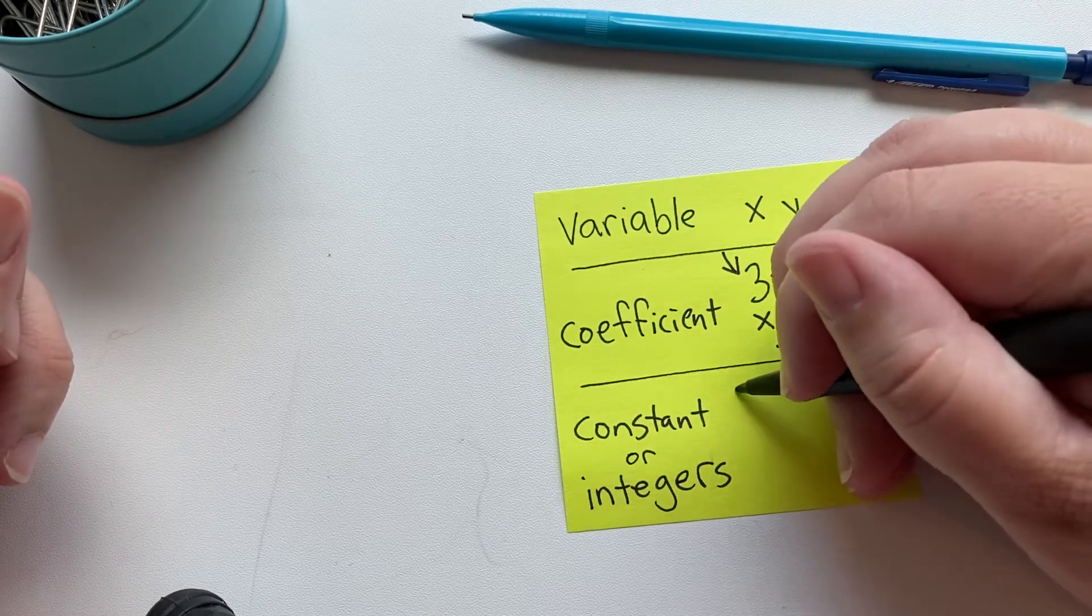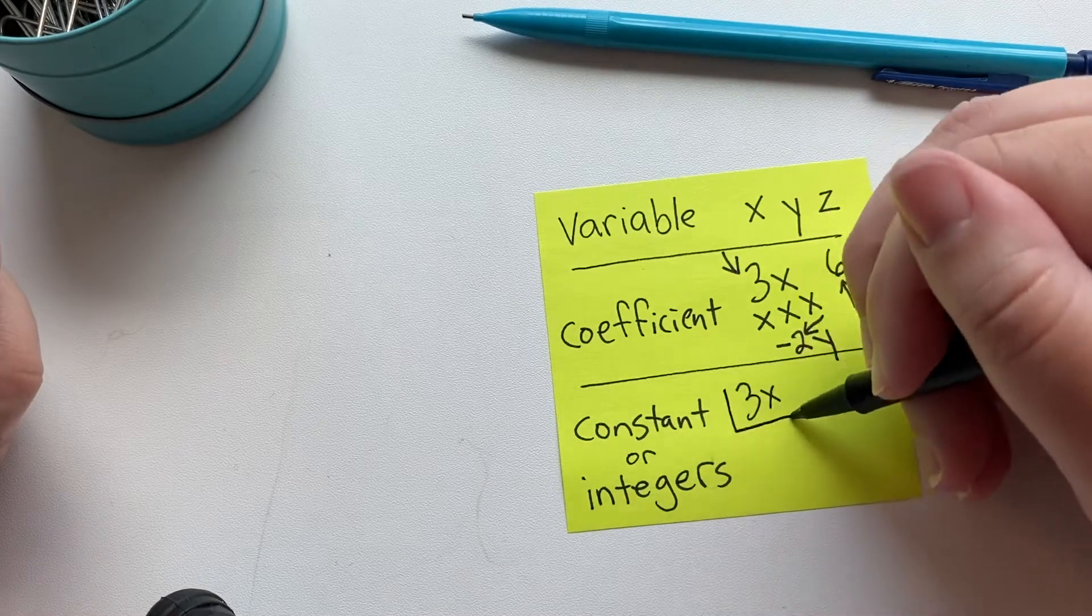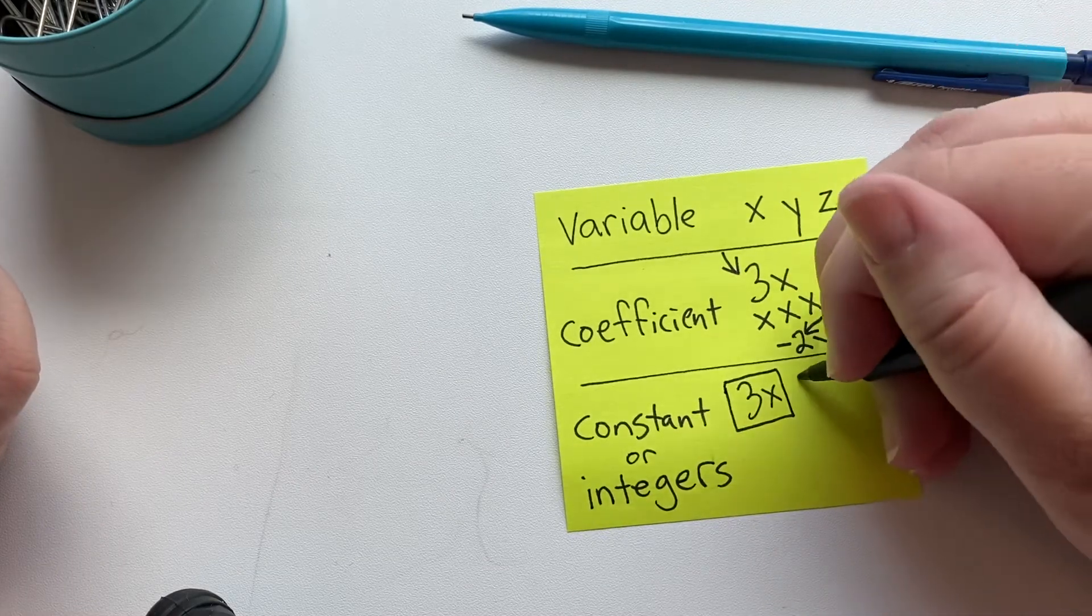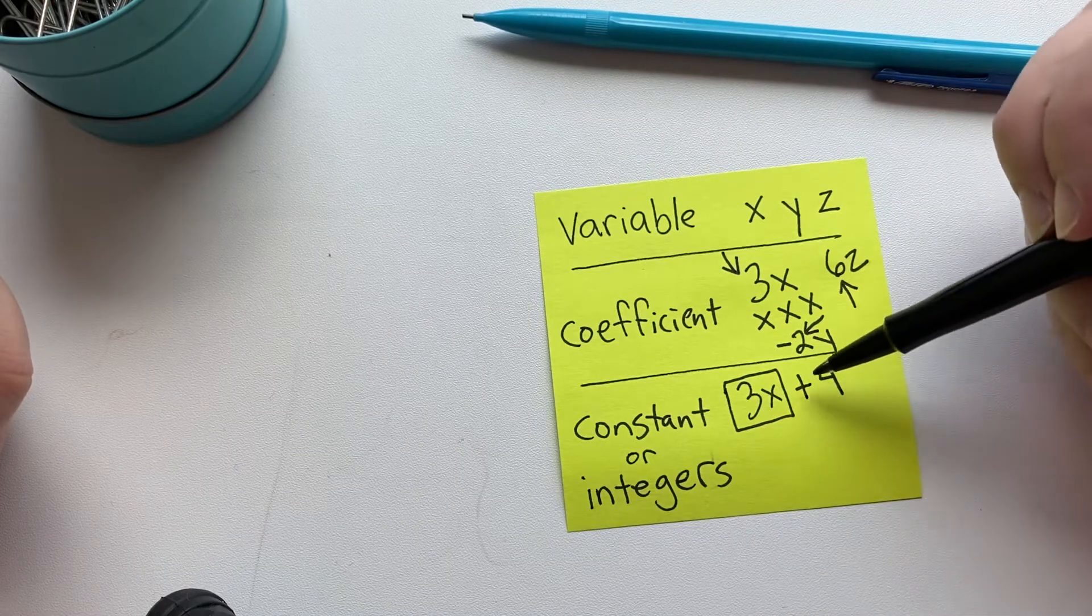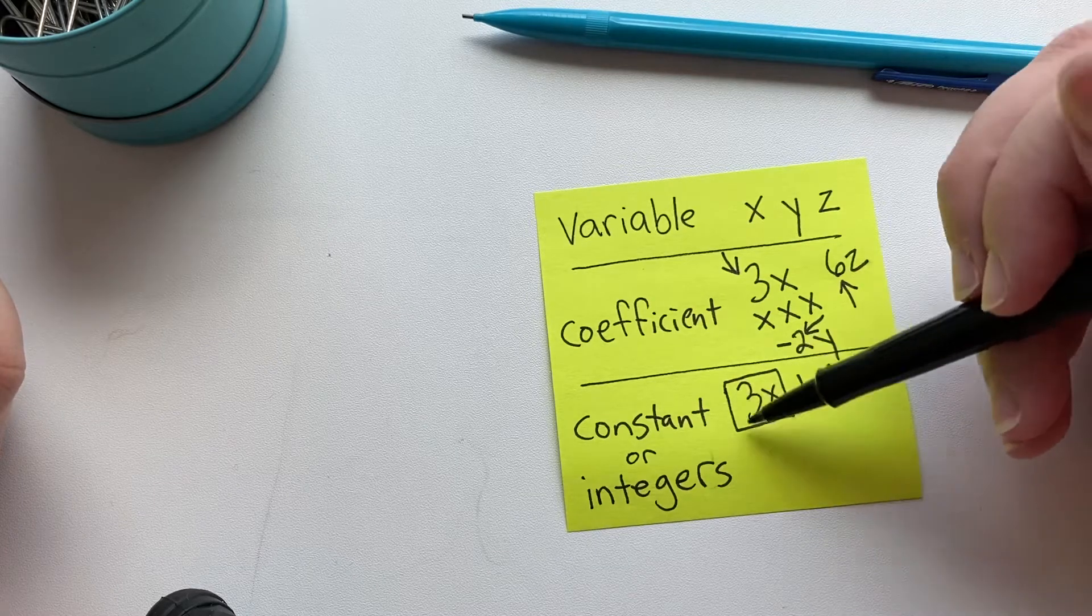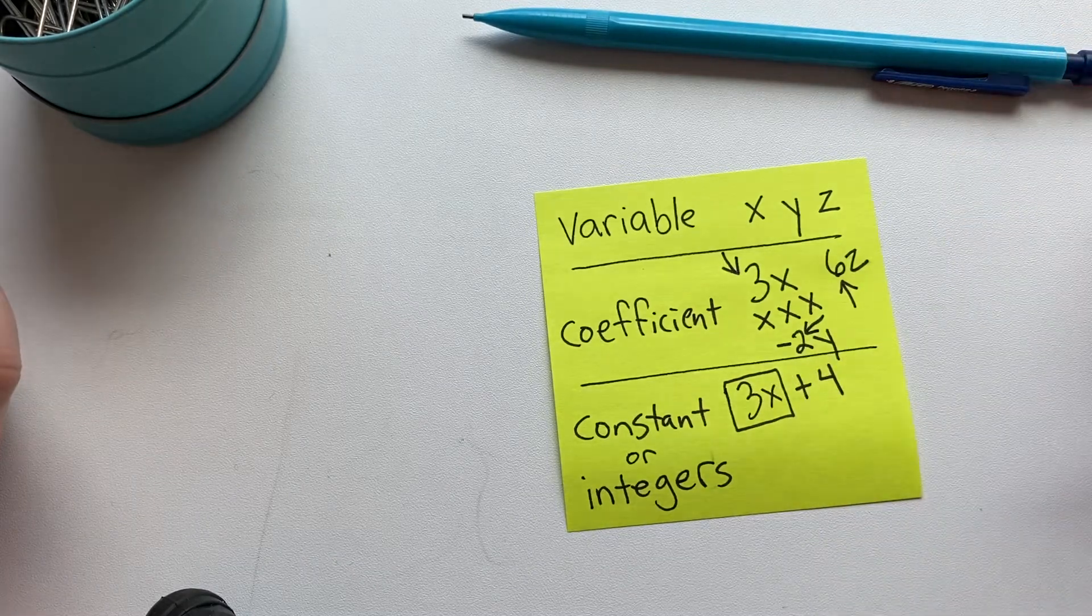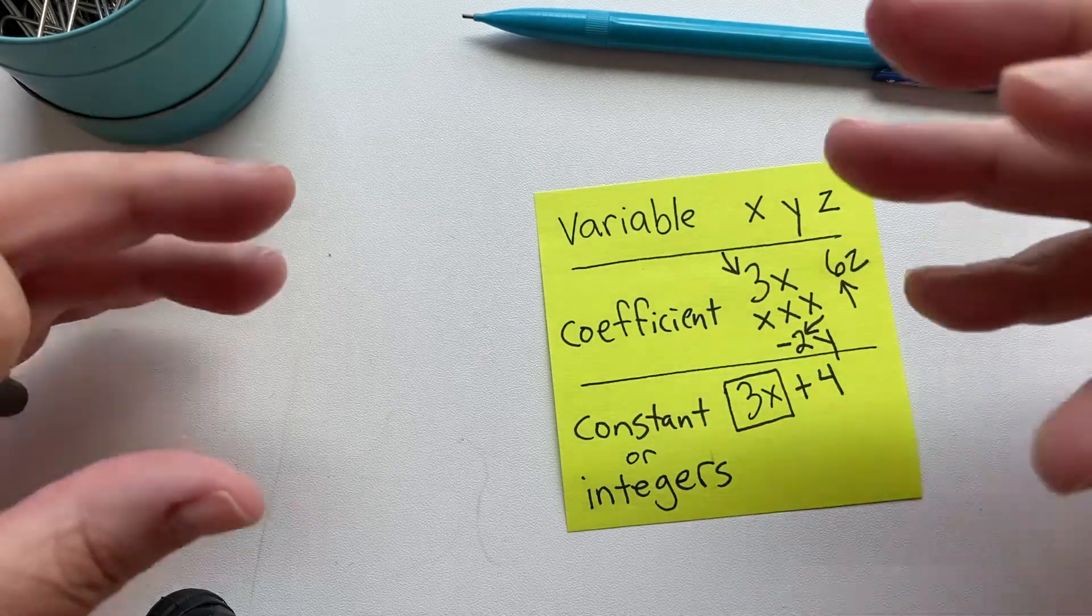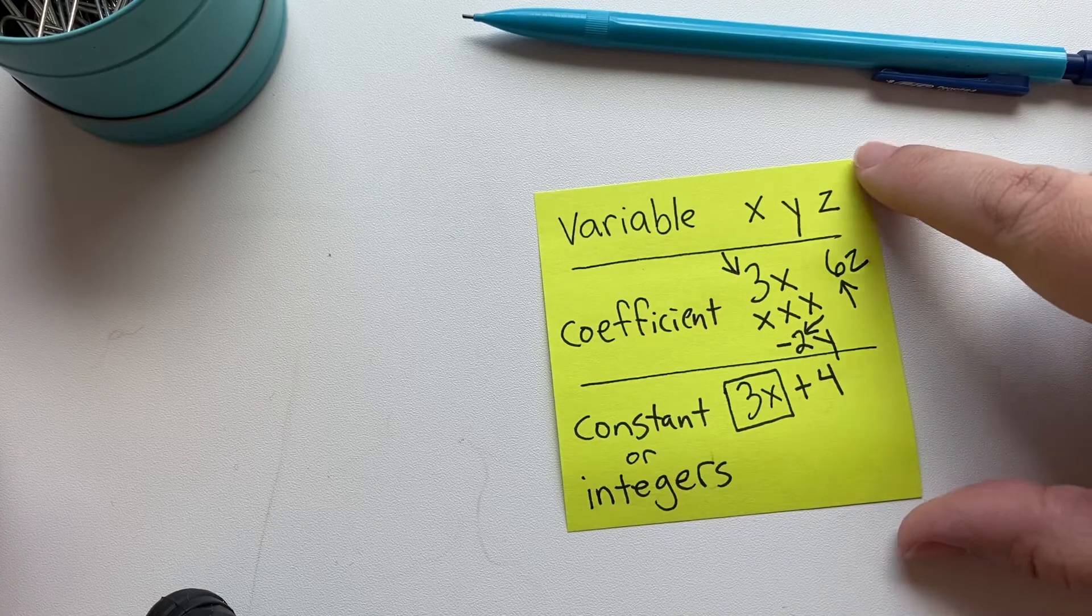So when you have 3x, that is one kind of term because it has a variable. And if it said plus 4, that would be our constant or our integer. These can be added together, these can be added together, but these two cannot be simplified together. They can't be combined because they're different types of terms.